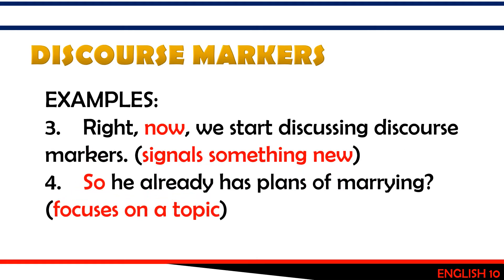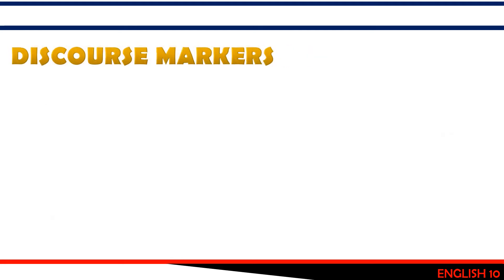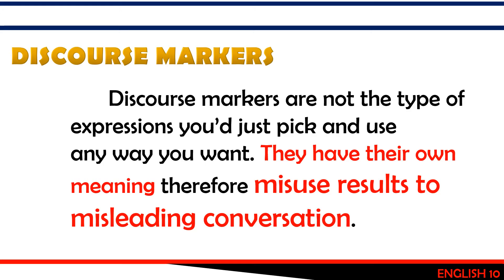The fourth sentence: 'So he already has plans of marriage.' The discourse marker used is 'so,' which focuses on a topic — and the topic here is the plans of marriage. Discourse markers are not the type of expressions you'd pick and use just any way you want. They have their own meaning. Therefore, misuse results in misleading conversation. You have to be very careful because there is a specific use for each of the discourse markers.